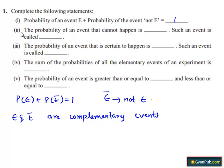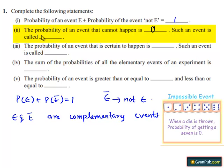Coming to the second bit, the probability of an event that cannot happen is 0. Such an event is called an impossible event.